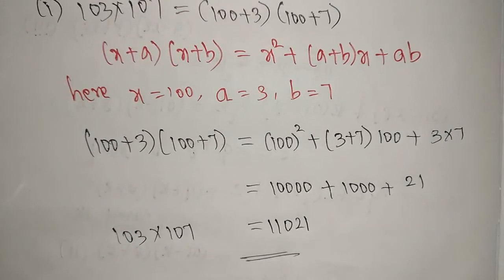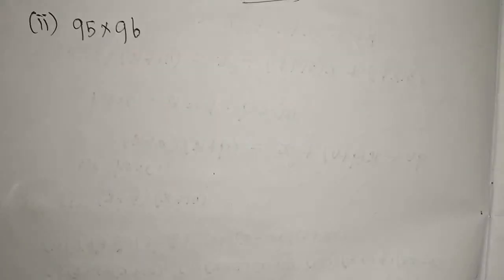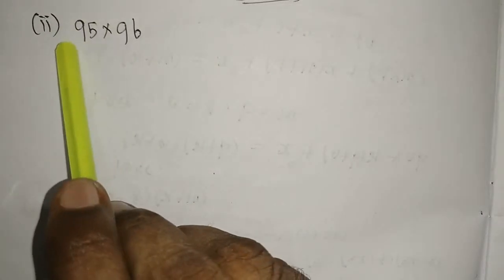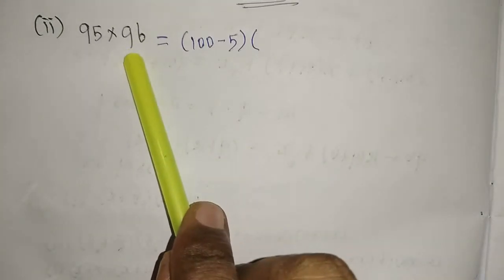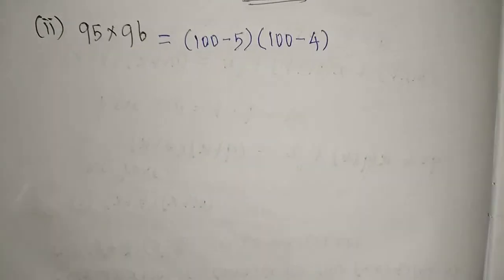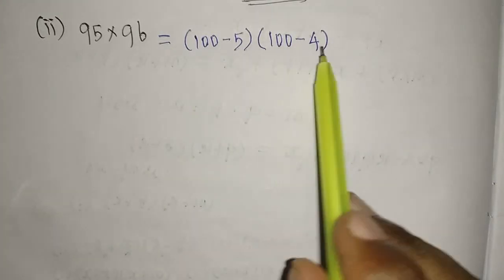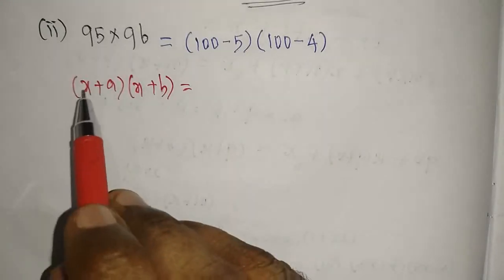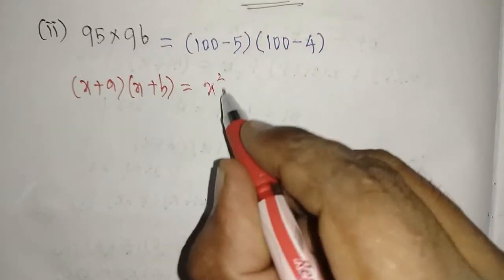I hope you understand this. Now we will go to the next question: the second one is 95 into 96. For 95 I am going to write 100 minus 5, and for 96 I am going to write 100 minus 4. Now the given expression is in the form of x plus a into x plus b, and the formula is x squared plus a plus b into x plus a times b.